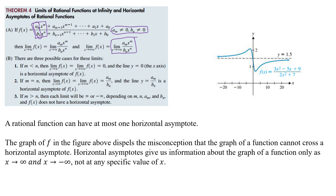There are three possible cases, and what we're looking at is our m and n values. If m is less than n — so the degree of the numerator is less than the degree of the denominator — then the limit of f(x) as x approaches infinity equals 0. That gives us the line y equals 0, and the x-axis is a horizontal asymptote of f(x).